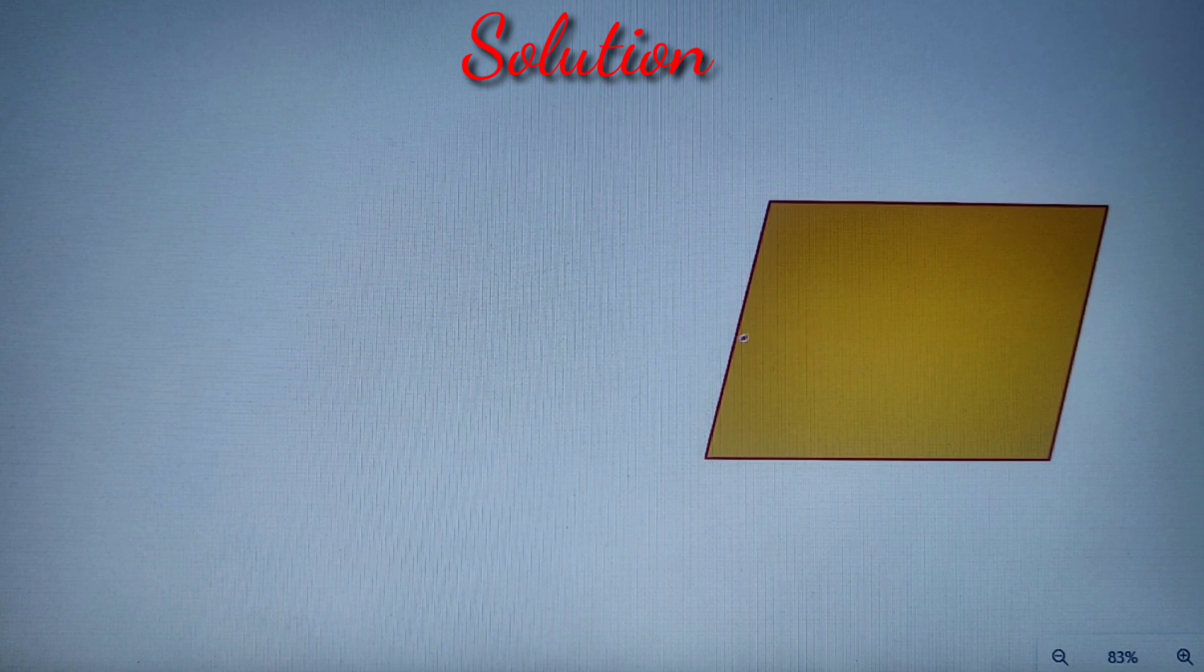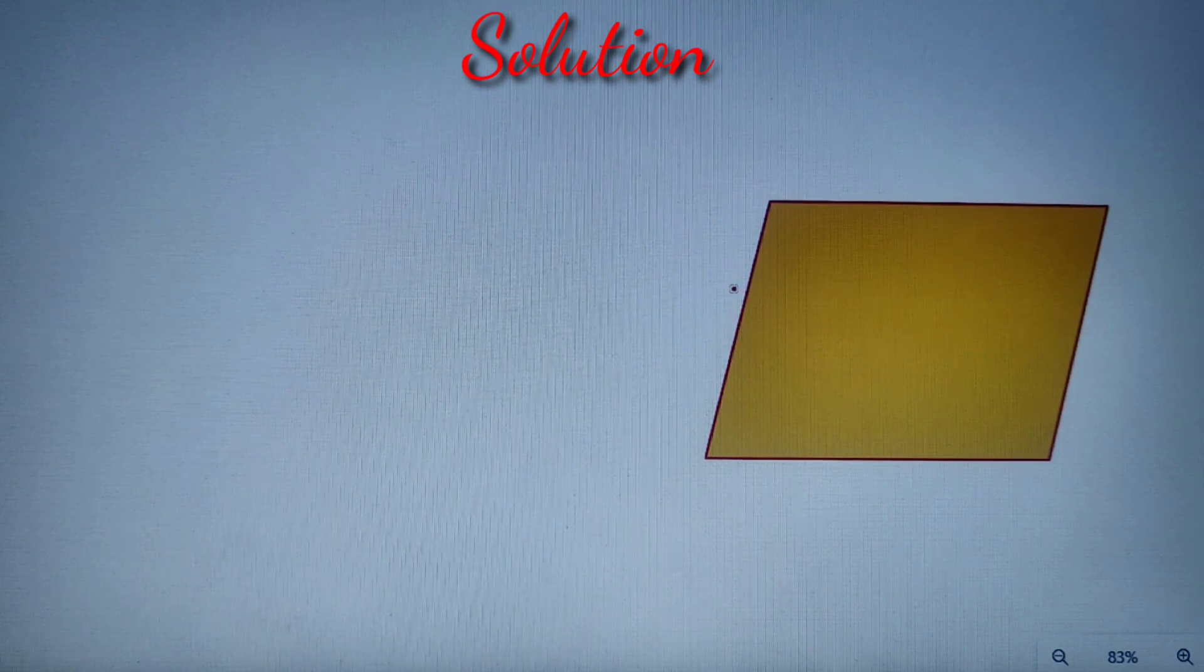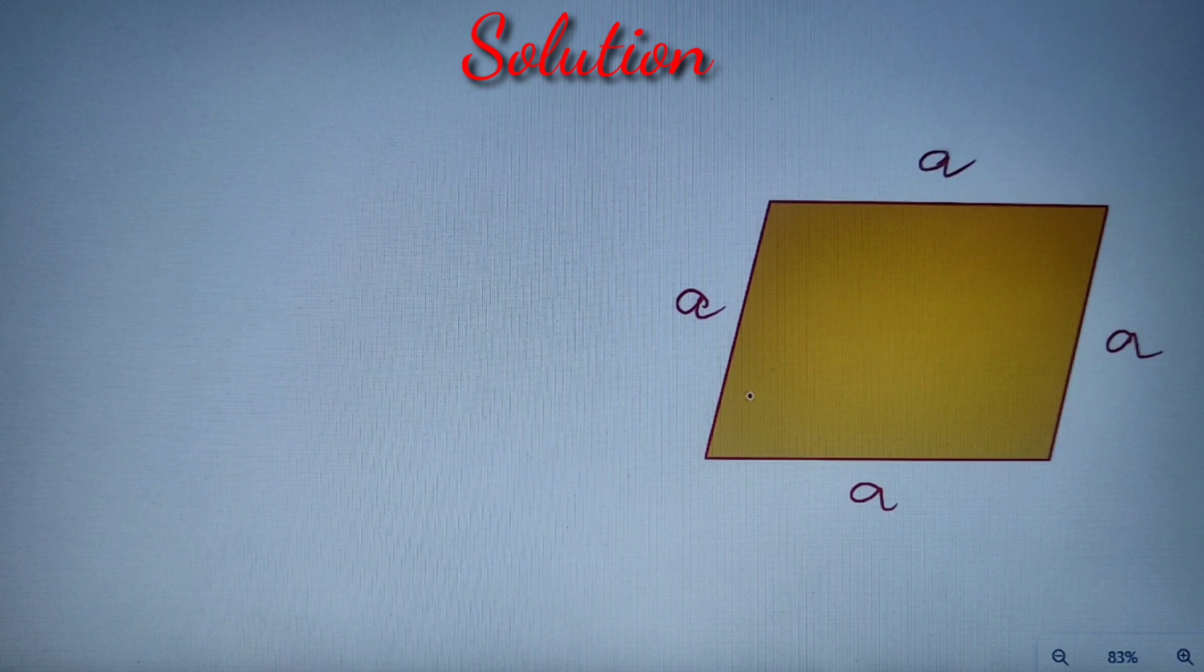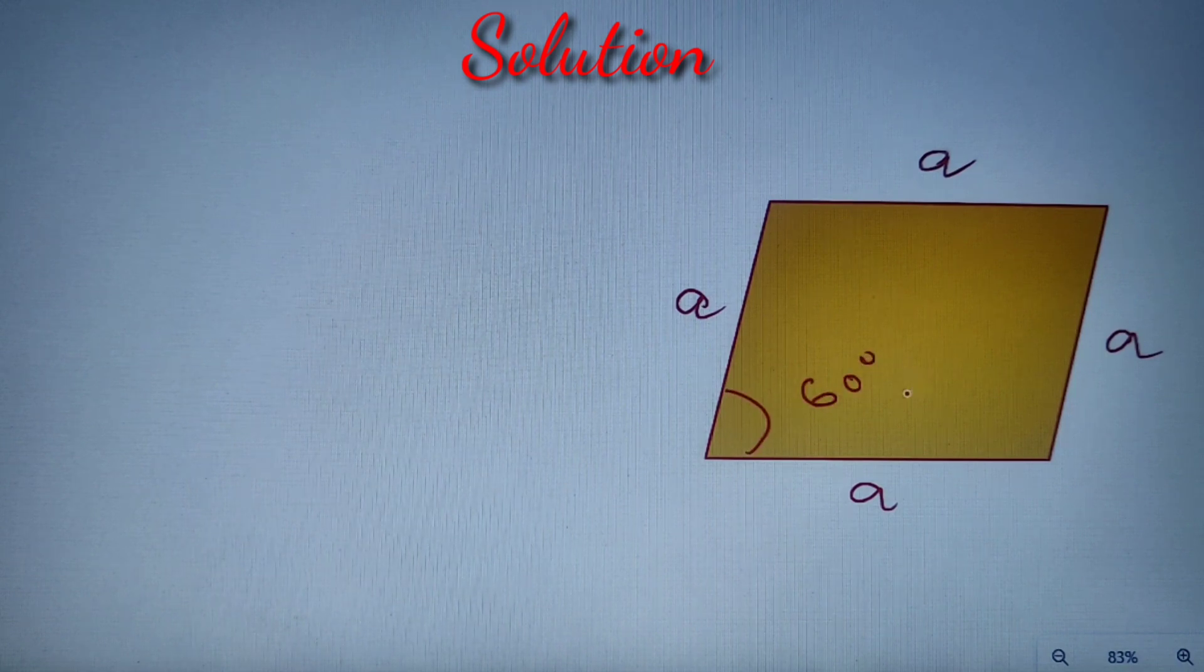I hope that you've tried the question and got the solution, and if you didn't then let's check the solution. According to our given question, we are given a parallelogram whose all four sides are equal, so let us assume that all the four sides of this parallelogram are equal to variable a.